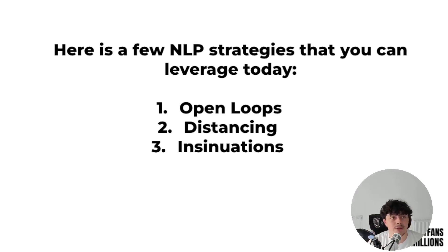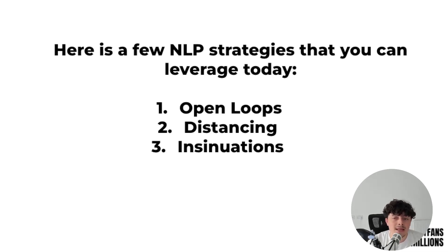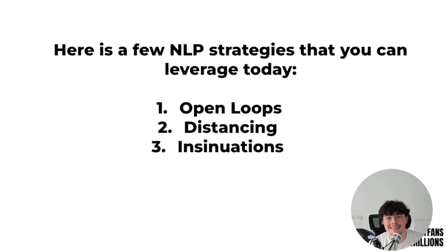Second: distancing. You want it to seem like the model is organic and not just constantly messaging people trying to make sales. A good way of doing that is through distancing — saying something like 'hey, sorry, I'm busy right now, I'll talk to you a little bit later.' This creates a more organic feel and also creates love, because people need time to fall in love with their imagination, and distancing gives them space and time to do that. Third: insinuations. Insinuating certain things — such as what the model's type is, or the kind of future she's looking for — can make subscribers fall in love with that insinuated future, even though it's never going to happen.